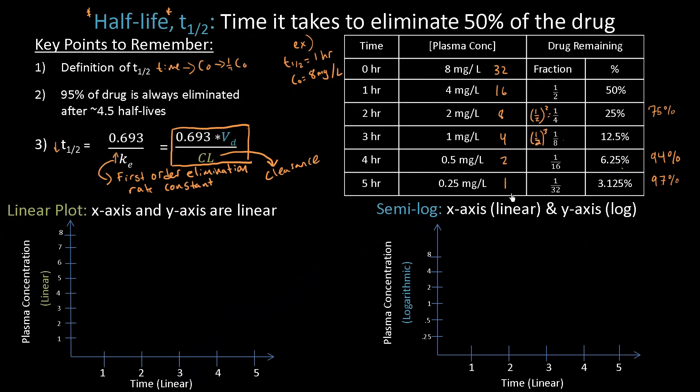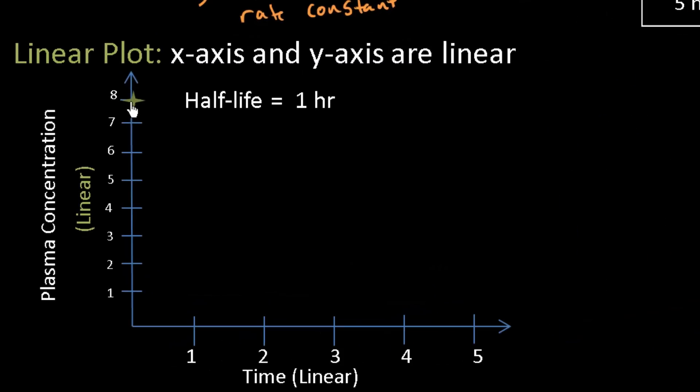And the third point has to do with the first order elimination rate constant and how it relates to the half-life. And to do that, we need a graph, a first order elimination rate graph using a linear plot and then using a semi-log plot. So using a linear plot, remember that the half-life is 1 hour. And so if I started at 8 milligrams per liter, after an hour I'd be around 4 and then I'd be around 2 and then I'd be around 1 and then I'd be around 0.5. And if I wanted to graph this, I'd get this exponential graph.